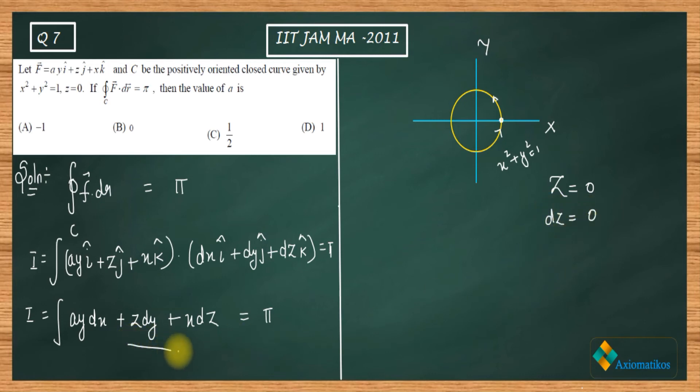z is always zero. That means dz will also be zero. So this part of integrand reduces to zero because z is zero as well as dz is zero. So your I will be just ay dx, and we have to still put a limit on it.